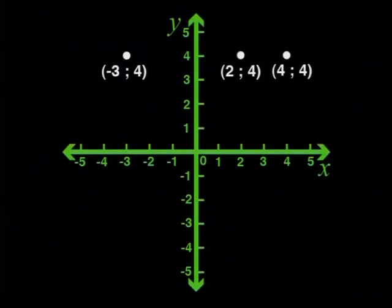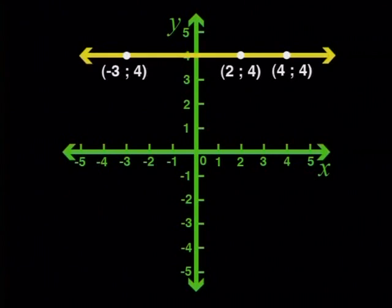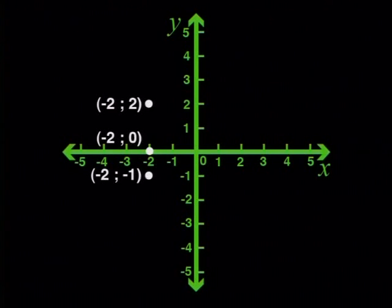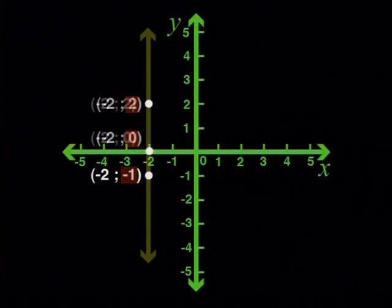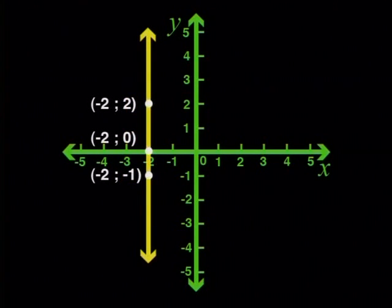Now I want to point out something else. Look at these three points. They have something in common. They have different x-values, but they all have the same y-values. And do you see that they all fall on this straight line? Here are three more points. They all have the same x-values but different y-values. And if I joined them, they would also make a straight line. This is very useful when you work with geometry on the Cartesian plane.